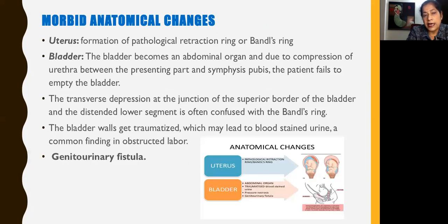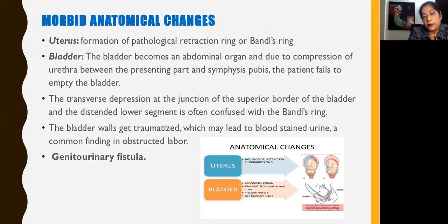Let us look at the various anatomical changes which occur in obstructed labour. Changes occur in the uterus and in the bladder. In the uterus there is formation of a pathological retraction ring called Bandl's ring. The bladder becomes an abdominal organ because the urethra is compressed between the presenting part and the symphysis and the patient fails to empty the bladder. A transverse depression at the junction of the superior wall of the bladder and the distended lower segment at times is confused with Bandl's ring. The bladder wall gets traumatized and thinned out, leading to blood-stained urine, which is an initial finding in obstructed labour. Subsequently, a genitourinary fistula forms.